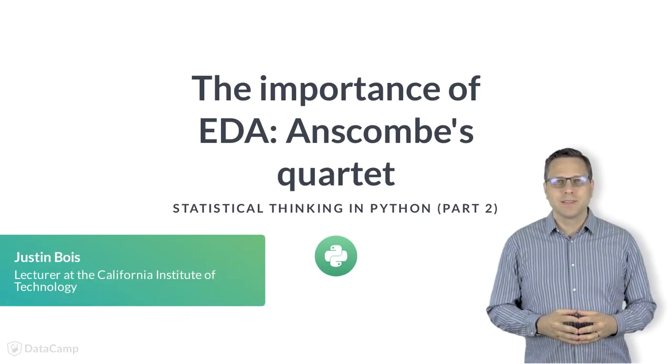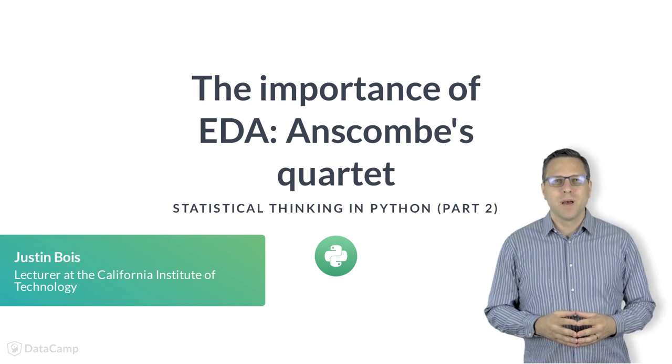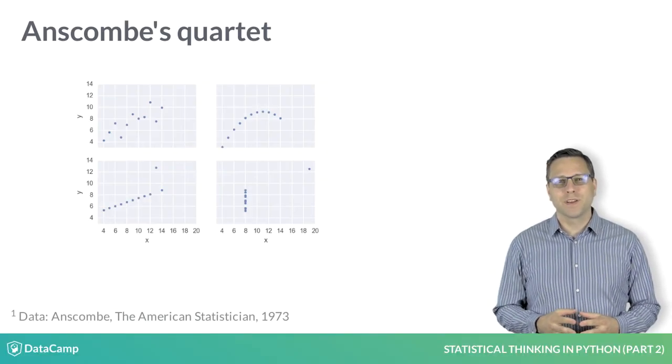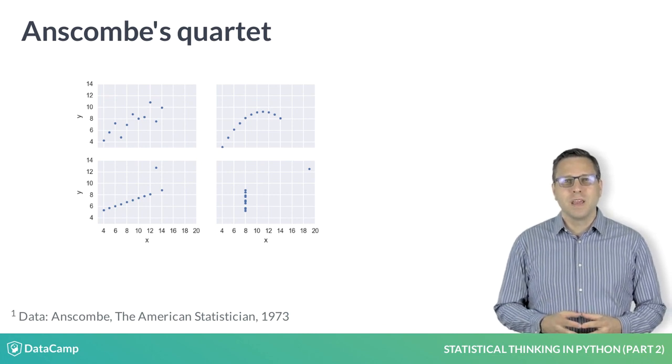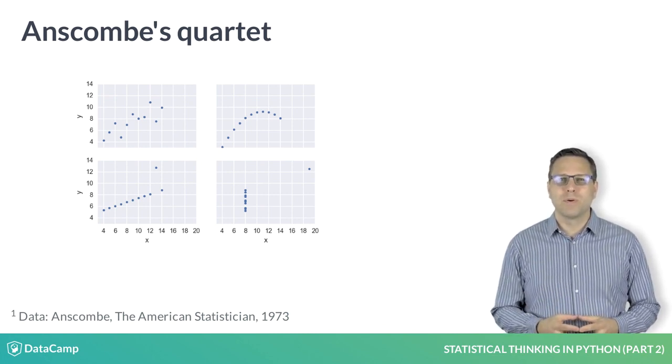In 1973, statistician Francis Anscombe published a paper that contained four fictitious XY data sets, plotted here. He uses these data sets to make an important point.